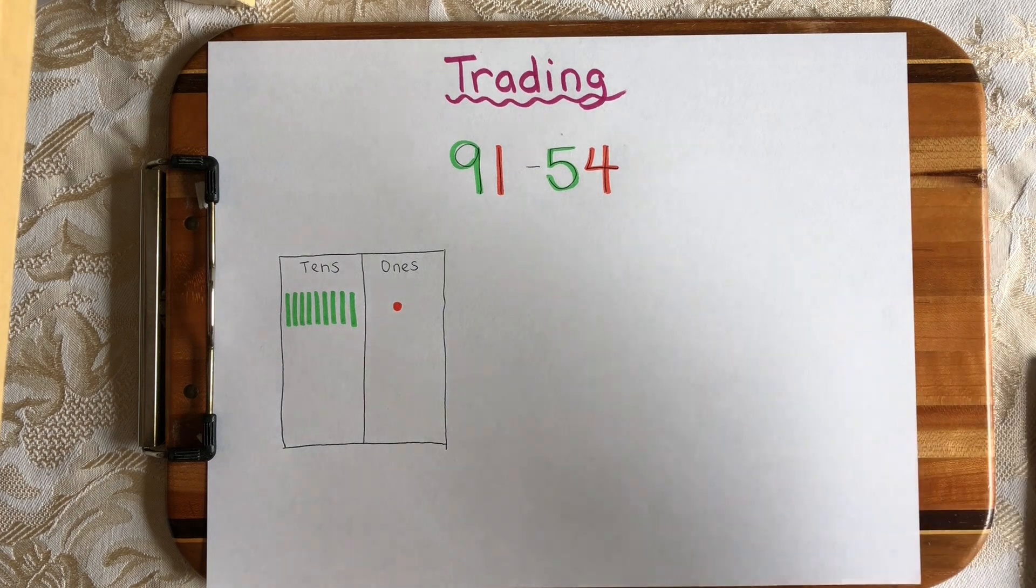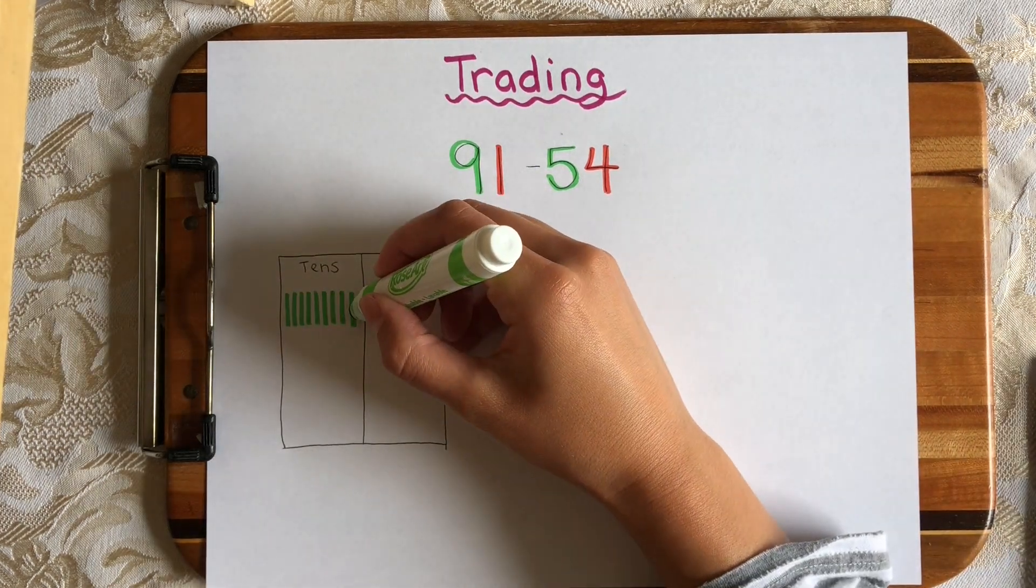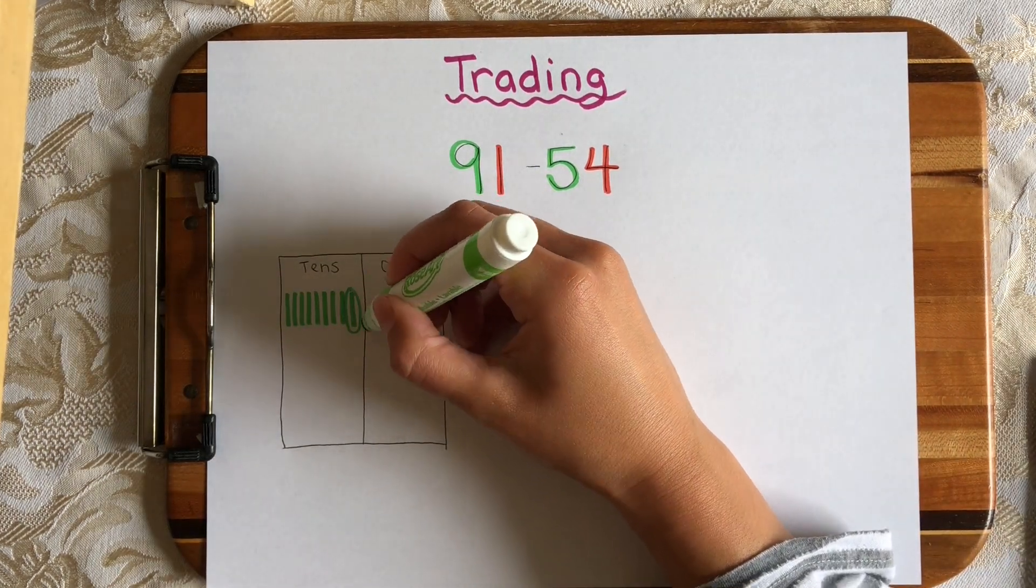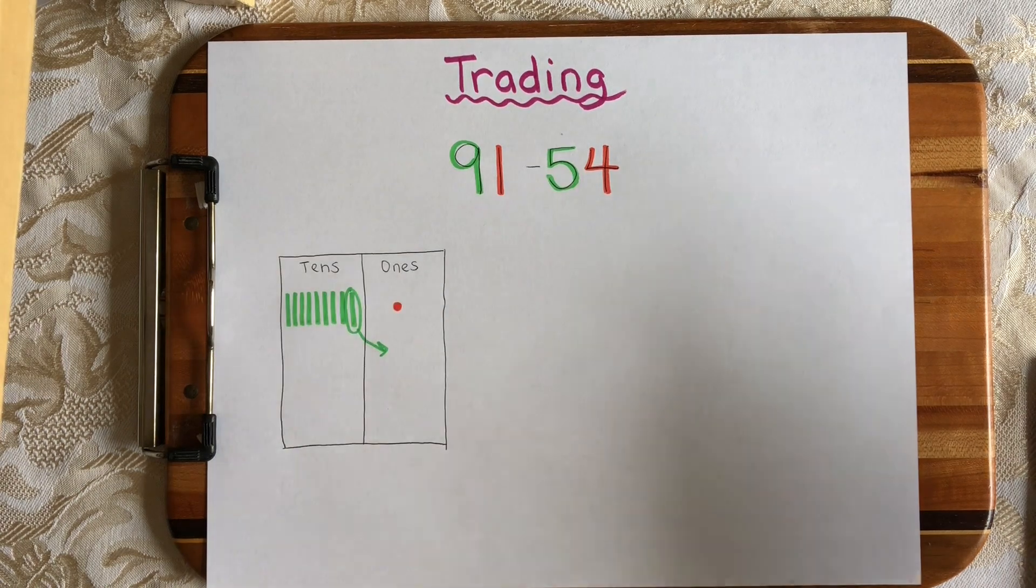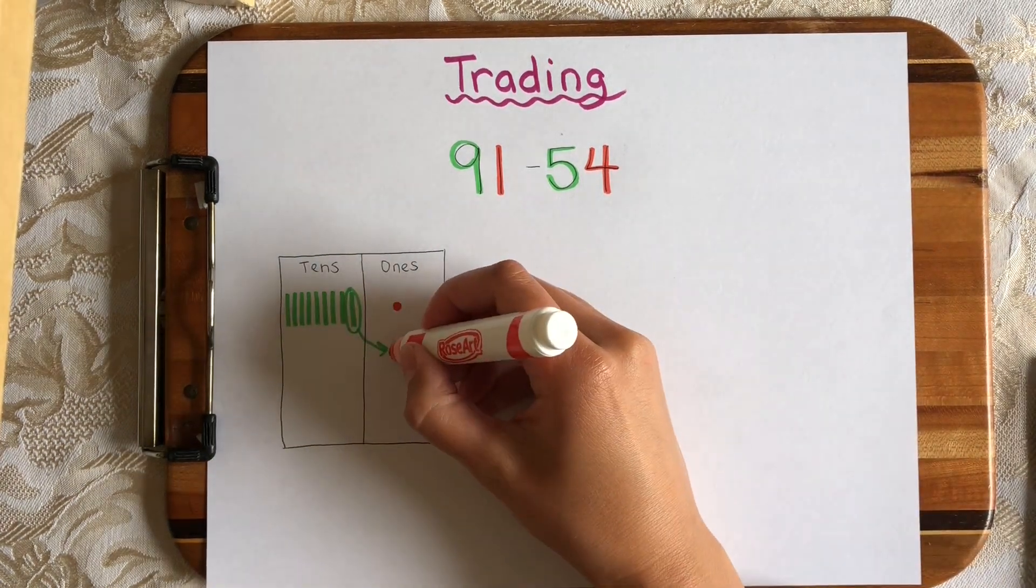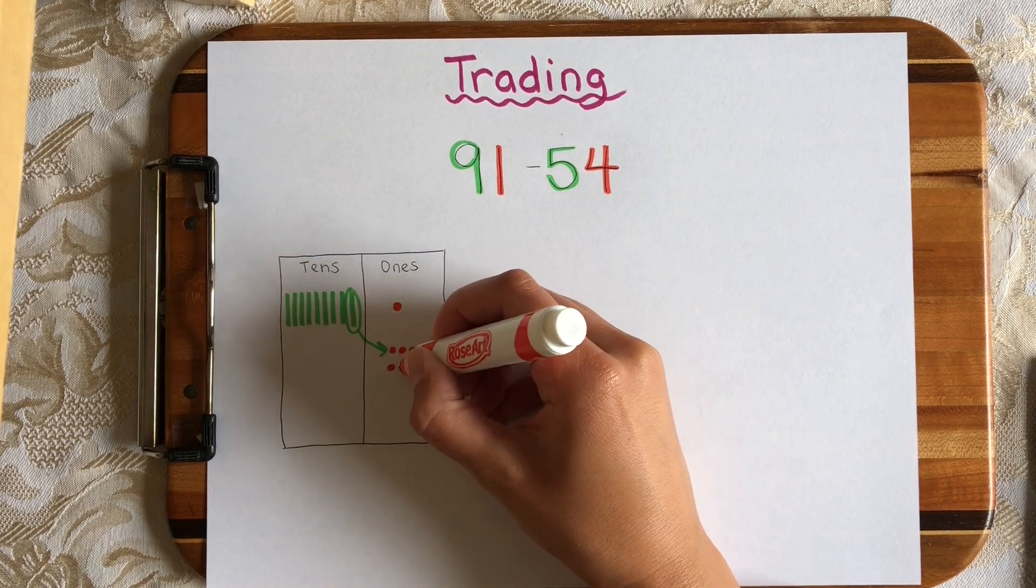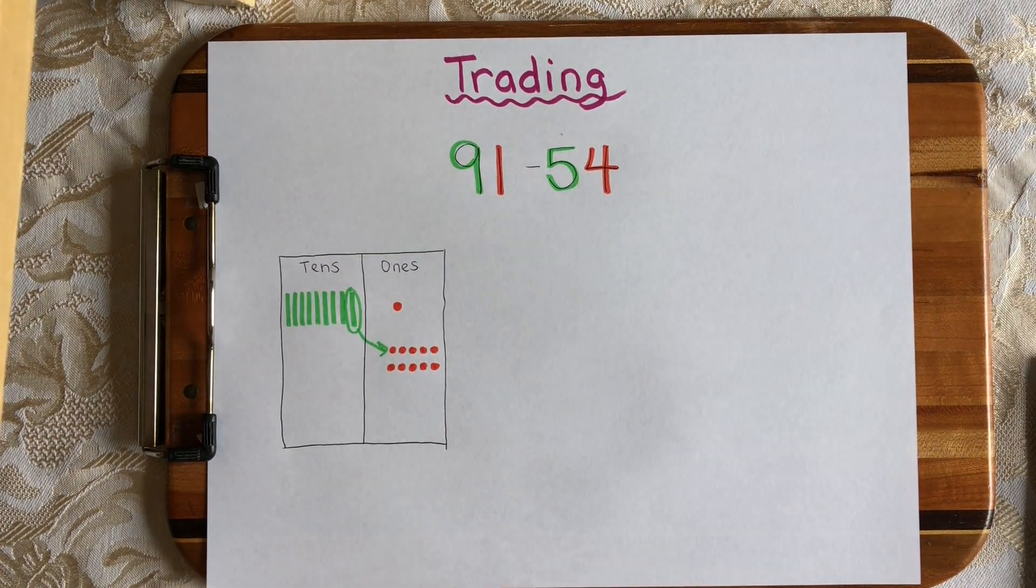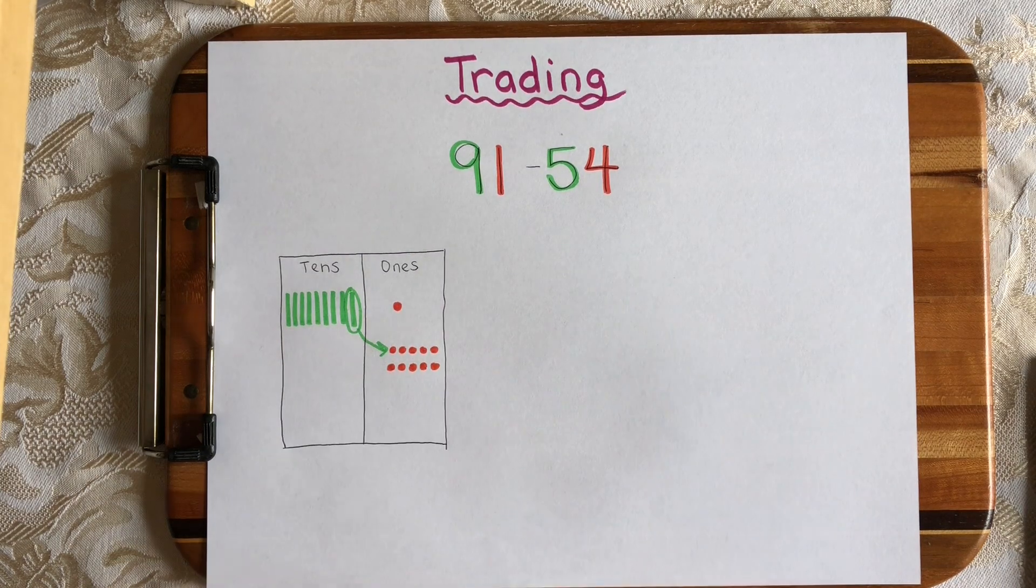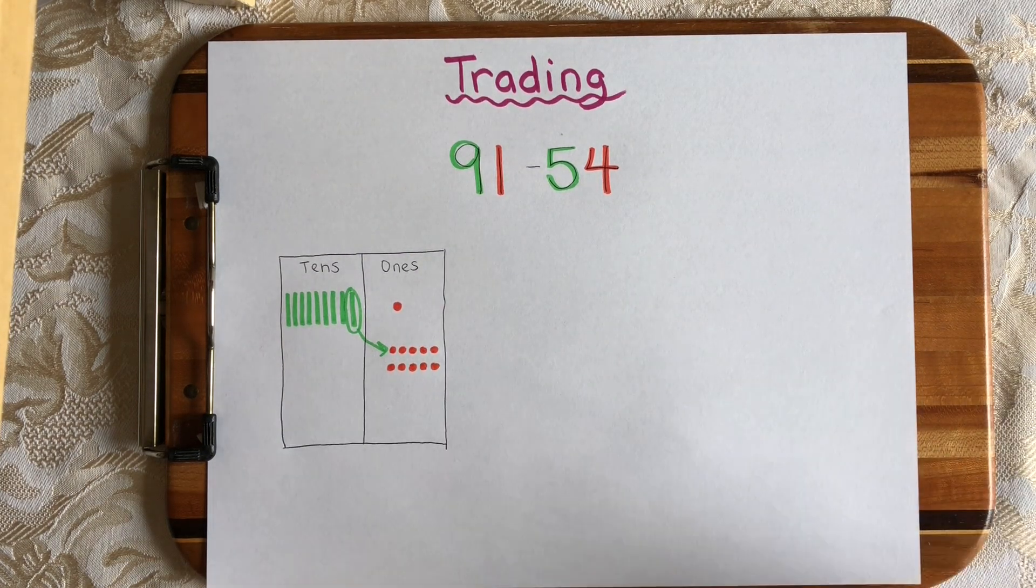So what I'm going to need to do is trade one of these 10s for 10 ones. 1, 2, 3, 4, 5, 6, 7, 8, 9, 10. Because I need to be able to take away 4 ones and now I can.